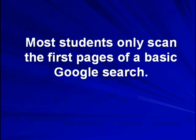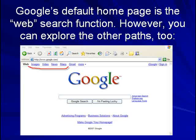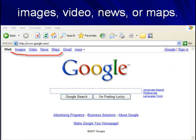Most students only scan the first pages of a basic Google search, but go beyond the obvious. Jump to different paths within Google. Google's default homepage is the web search function, however you can explore other search paths too, such as images, video, news, or maps.